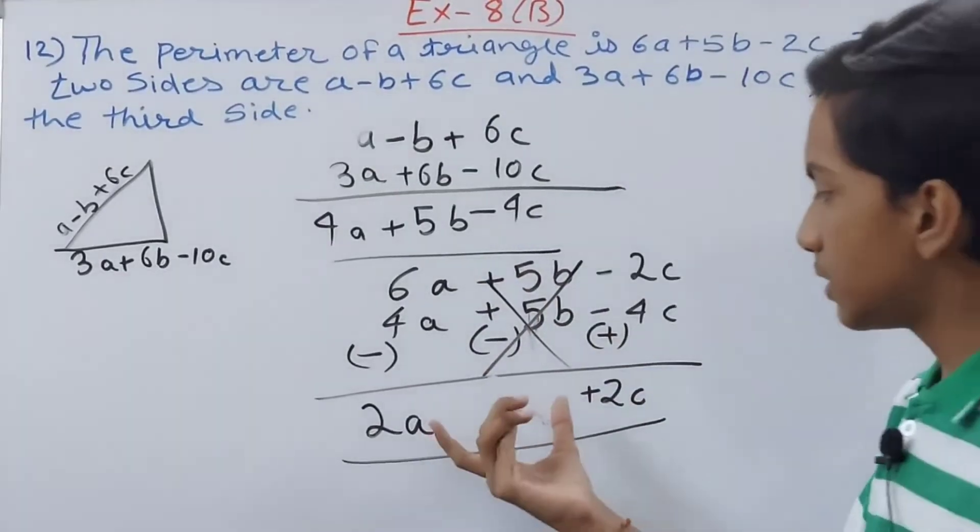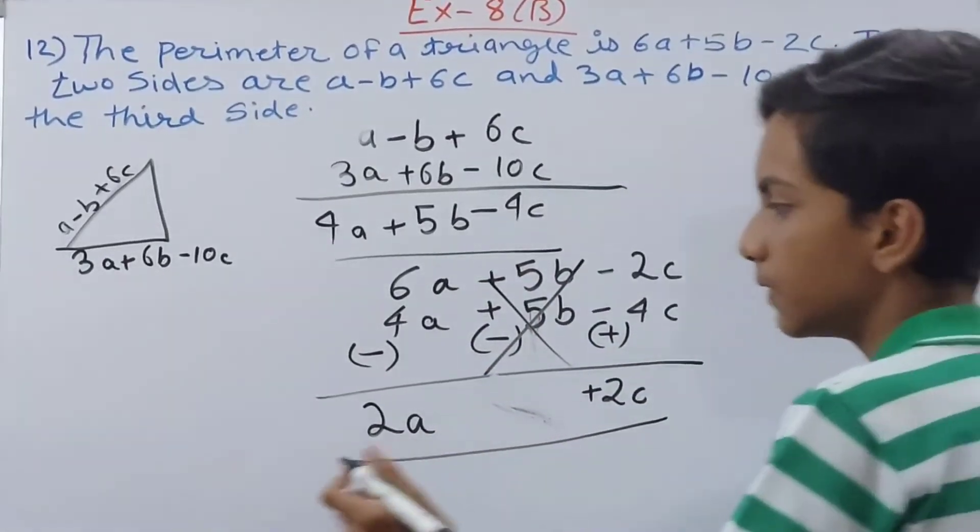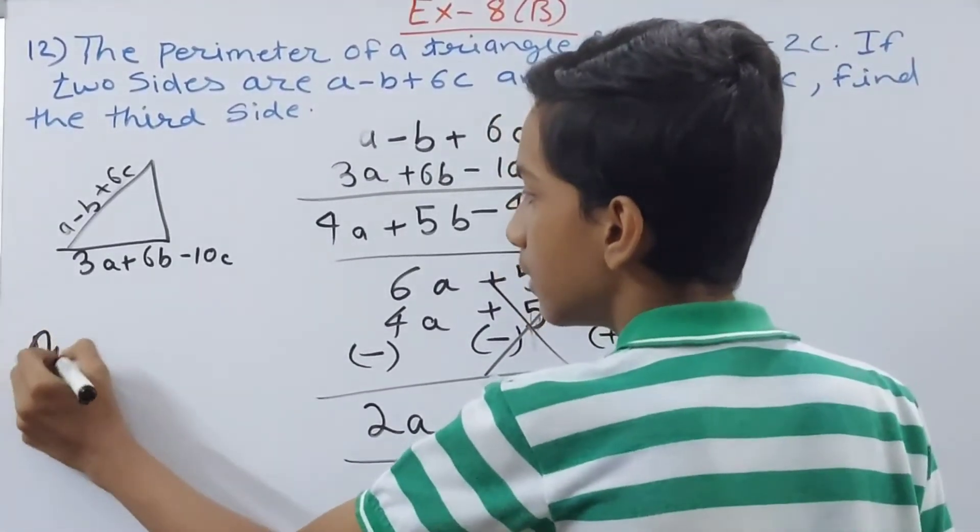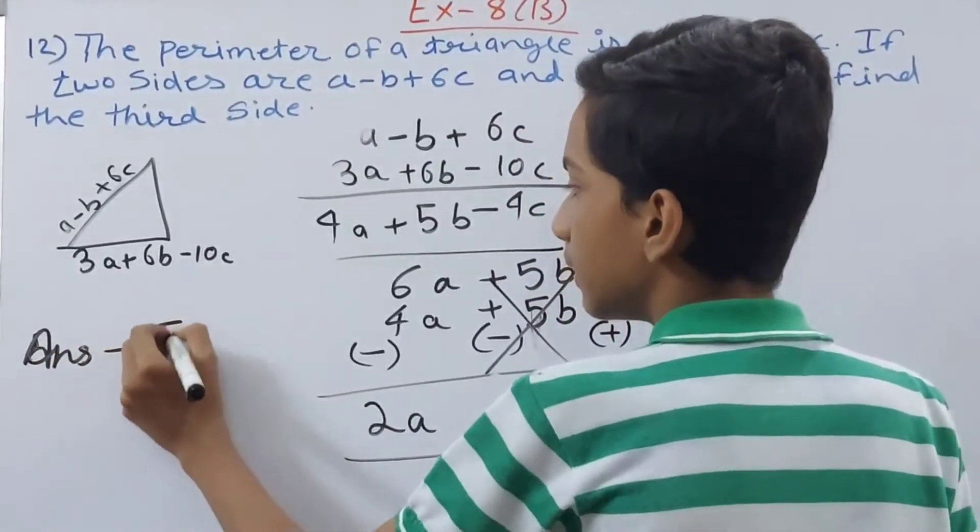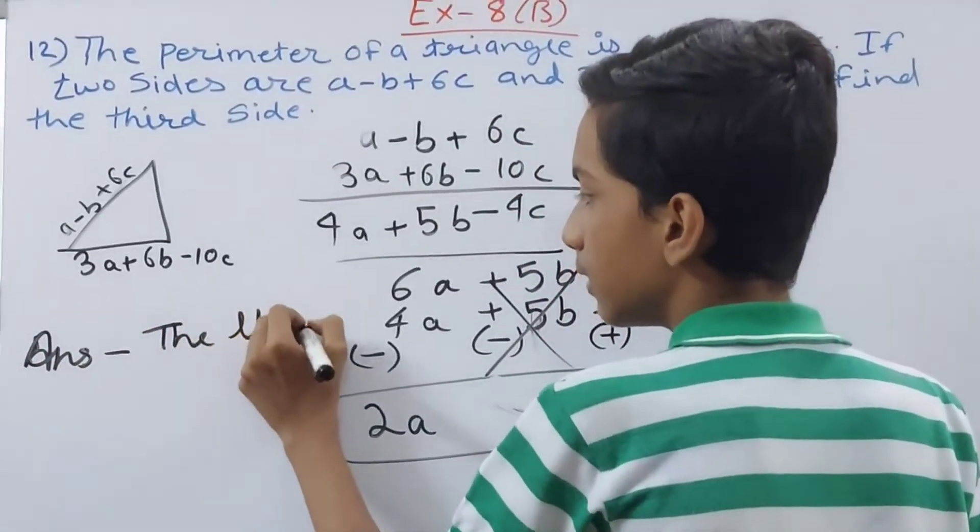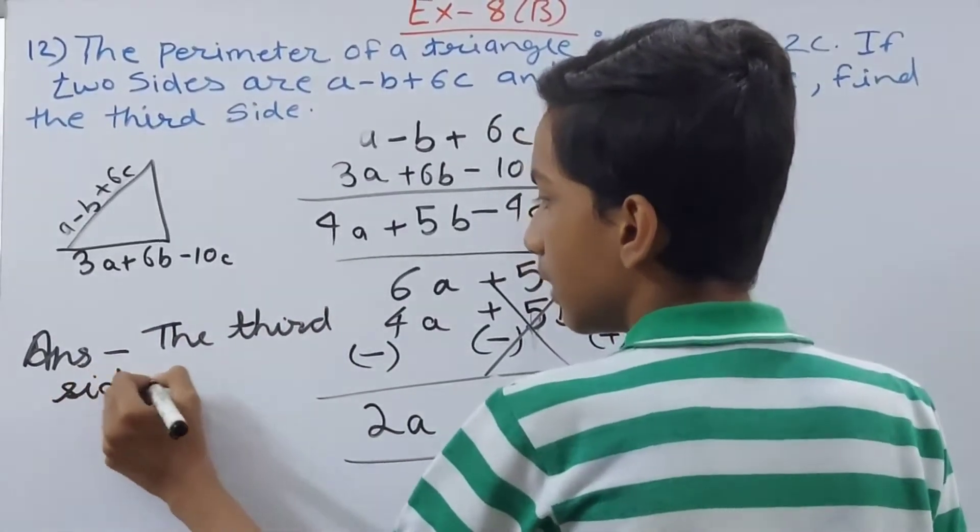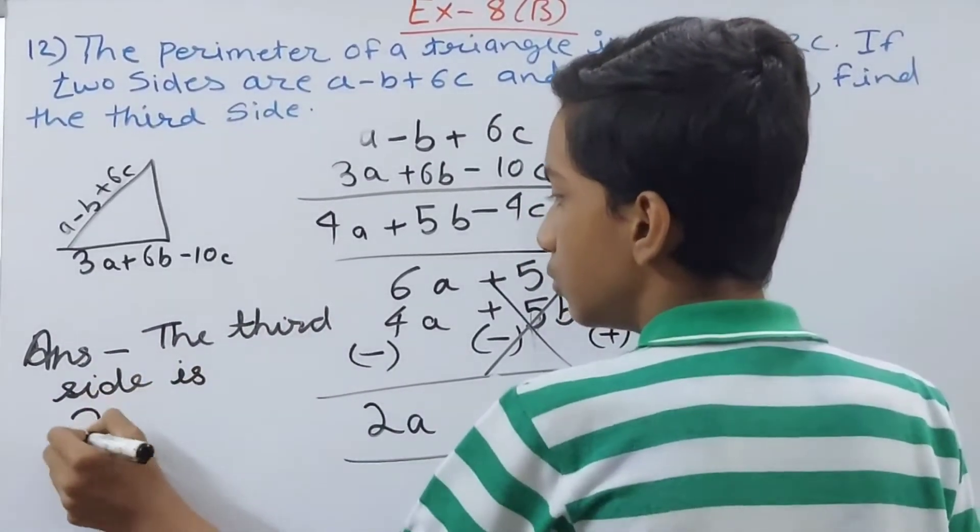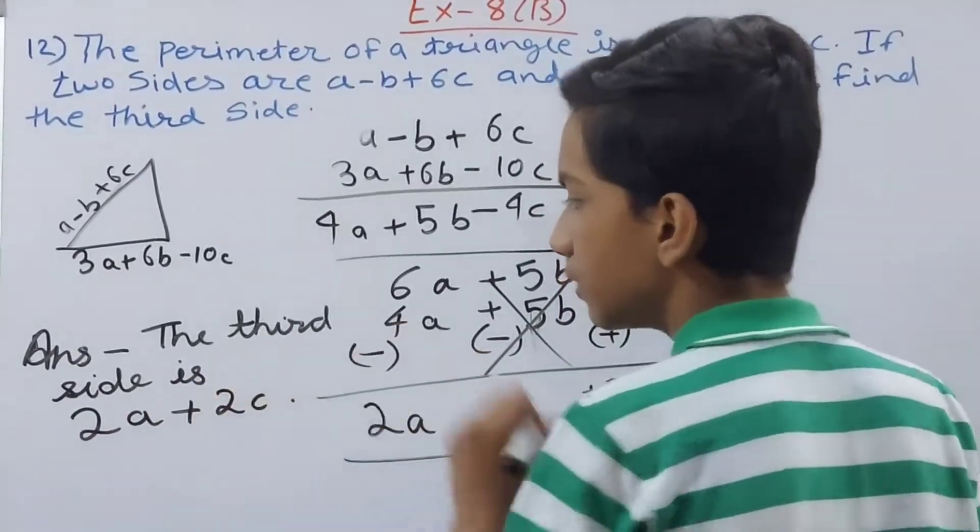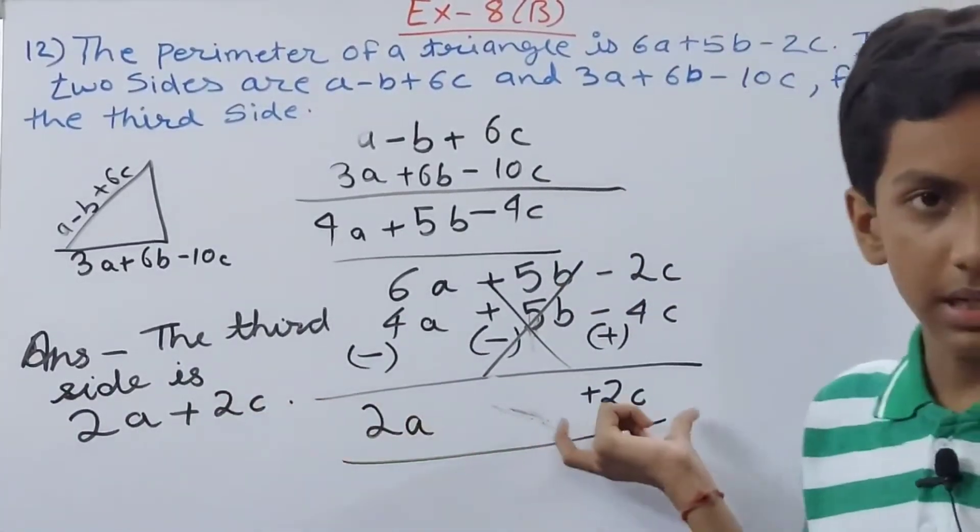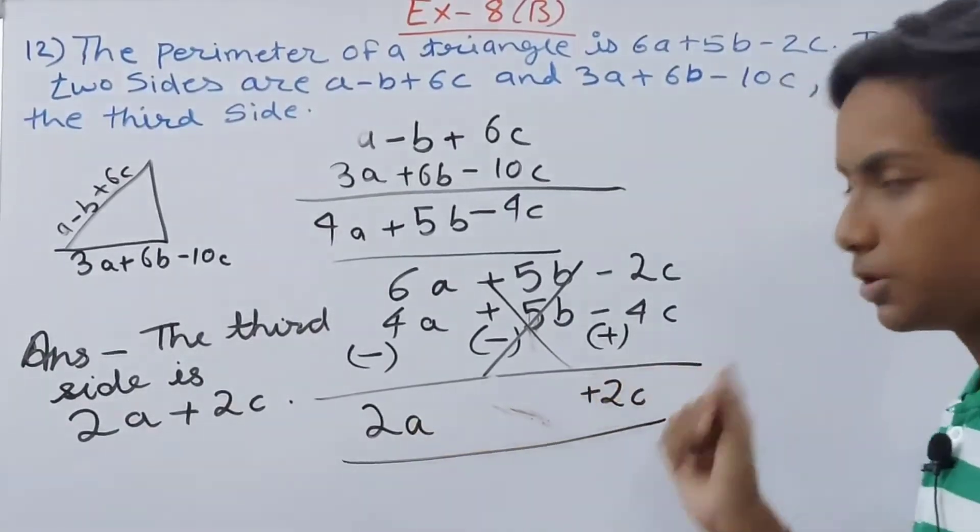So this is basically what we get. This is the length: 2a + 2c. So you can write the answer. The third side is 2a + 2c. This is the third side that we have got.